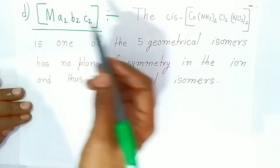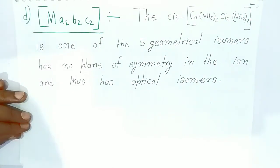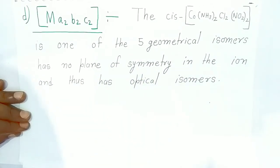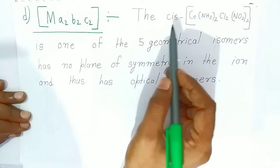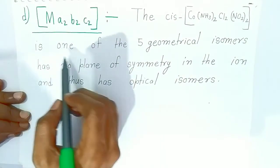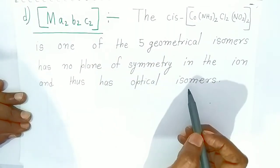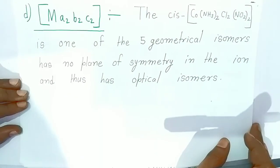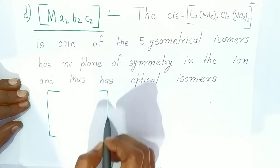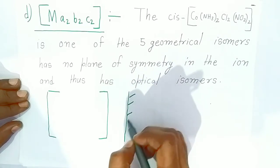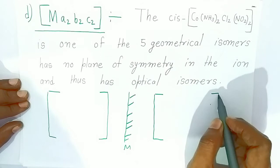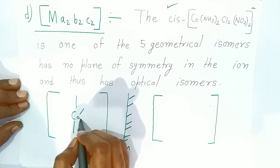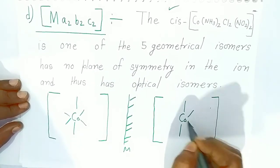The fourth type is M(A)₂B₂C₂. The cis form of this complex is one of five geometrical isomers and has no plane of symmetry in the ion, and thus has optical isomers. To find the optical isomers, draw two complex structures with a mirror between them. Only the cis form exhibits this optical isomerism. Cobalt is at the center in the octahedral arrangement.